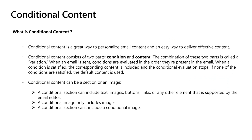Conditional content consists of conditions and contents, and their combination is called a variation. When a marketer sends any email using conditional content, Dynamics 365 Marketing will evaluate what conditions are present in the email and check in which order they should appear. When the condition is satisfied, the corresponding content is included and the conditional evaluation stops. If none of the conditions are satisfied, then the default content will be used.